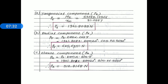The third and last component is the axial or thrust component P sub a. P sub a equals P sub t times tan alpha times sin gamma. Substituting values: 1921.8083 times tan 20 degrees times sin 26.5650 degrees. After simplification, axial component P sub a equals 312.8168 newtons.